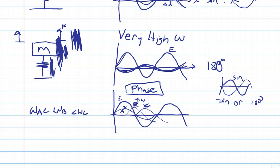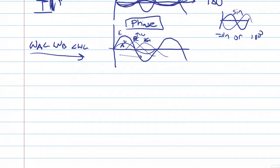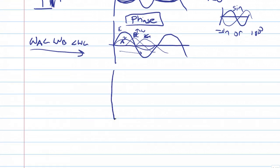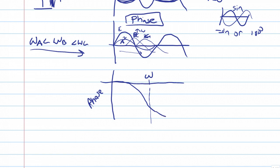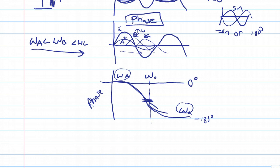As you increase frequency, you get a phase shift. On a phase diagram with phase on the vertical axis and angular frequency on the horizontal axis, the phase starts at zero for low frequencies and shifts toward minus 180 degrees at high frequencies. The midpoint — roughly at minus 90 degrees — is the resonance frequency.